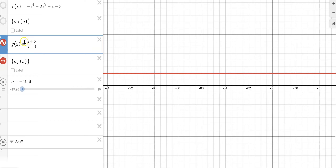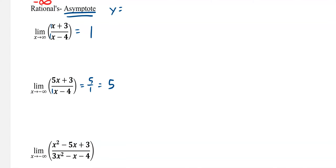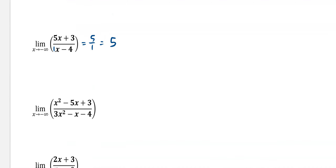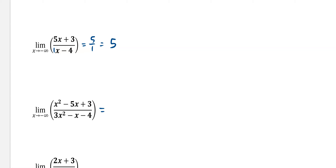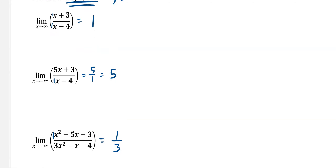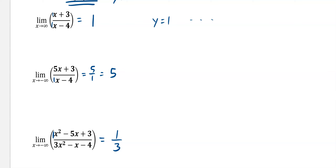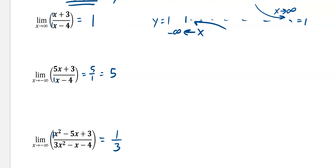Whatever those coefficients are — whatever your horizontal asymptote is — that is your limit. Here, the x squared and x squared are the same degree, so this would just be 1/3. It doesn't matter if it's going to infinity or negative infinity. They both have that same horizontal asymptote, and our graph is just approaching that number from both directions. So if the degree is the same, that's it — nice and quick.